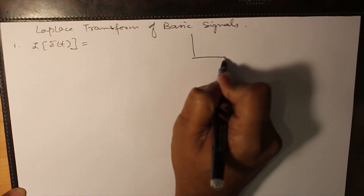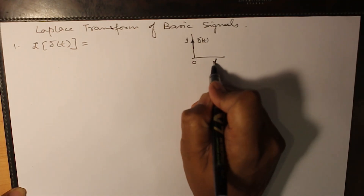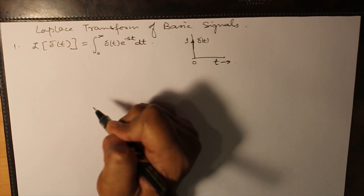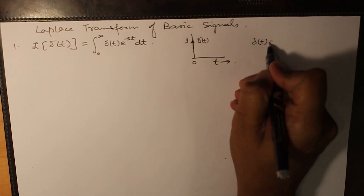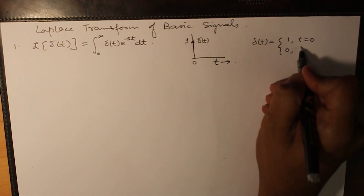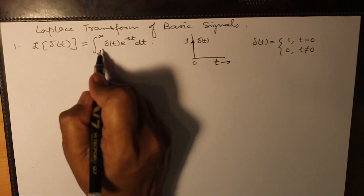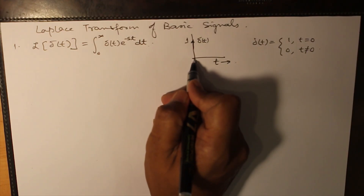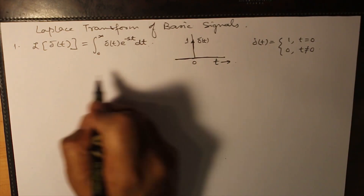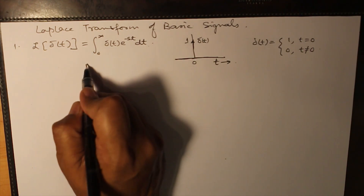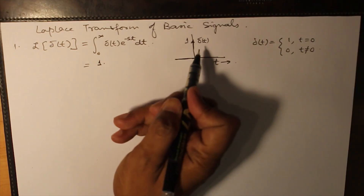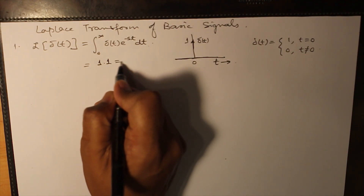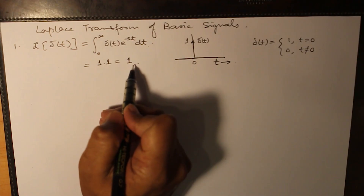Laplace transform of delta(t): the integral from 0 to infinity of delta(t) e raised to the power minus st dt. As you know, delta(t) exists only at t equals 0 and its value is 0 everywhere else. So the integral becomes a summation where all values for t not equal to 0 are zero, and at t equals 0, delta(t) is 1. So 1 multiplied by e raised to the power minus st — when t equals 0, that becomes 1. So 1 times 1 equals 1. Therefore, the Laplace transform of delta(t) is equal to 1.